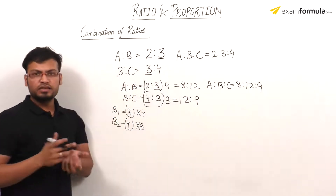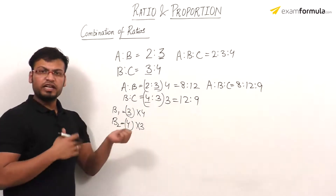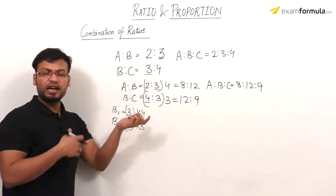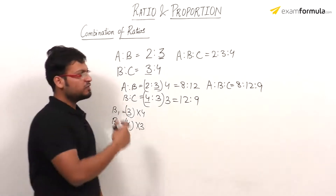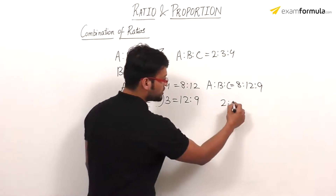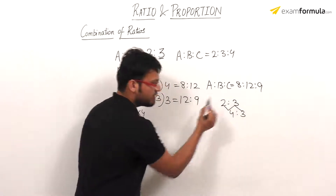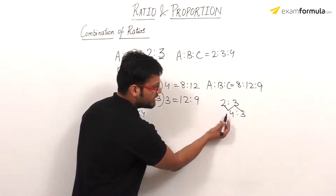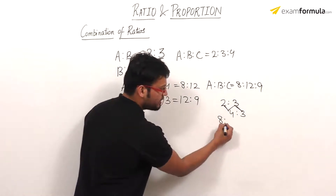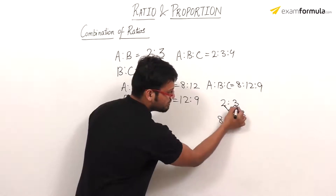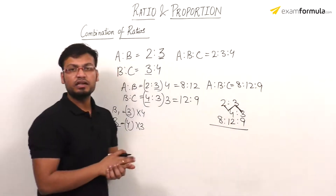Now let me show the trick. When the given ratios are 2 ratio 3 and 4 ratio 3, the trick involves cross multiplication: first multiply these two, next these two, and finally these two. My final ratio will be 8 ratio 12 ratio 9 — the same result as with the LCM method. This trick is confirmed to work correctly.